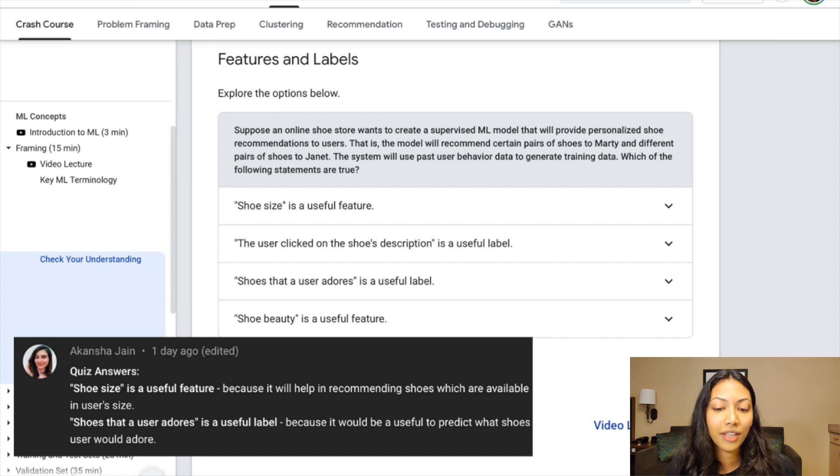Akansha, that's actually a pretty interesting answer. One thing that I would like to ask you is how would you measure something like adoration? So shoes that a user adores, it's a really hard metric to measure because it's hard to measure adoration. It's hard to measure how much you like something. So that's actually pretty hard to measure.